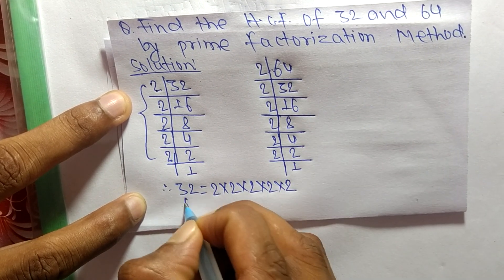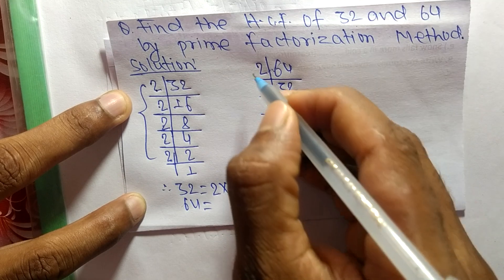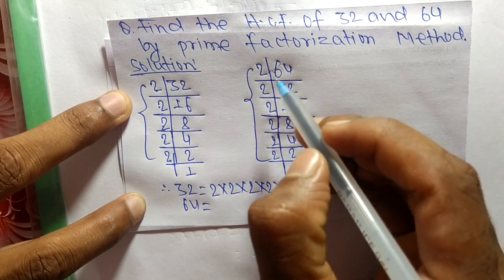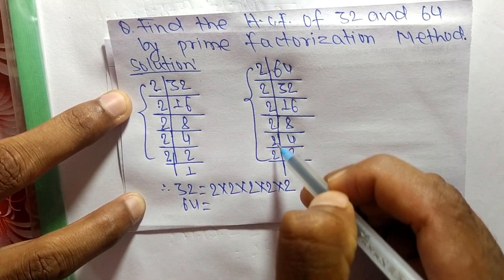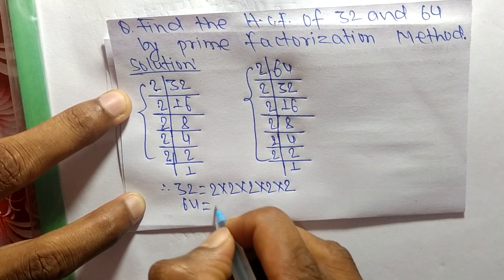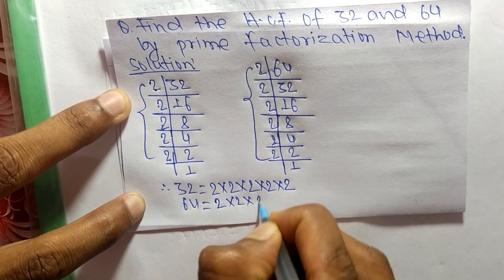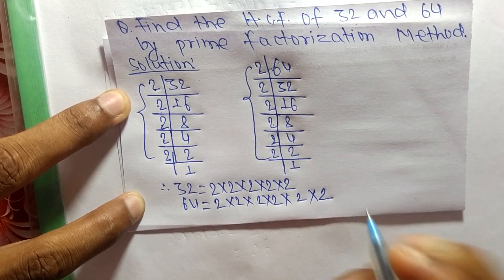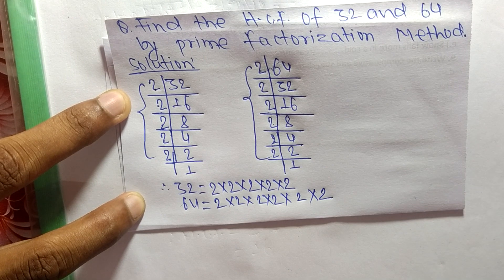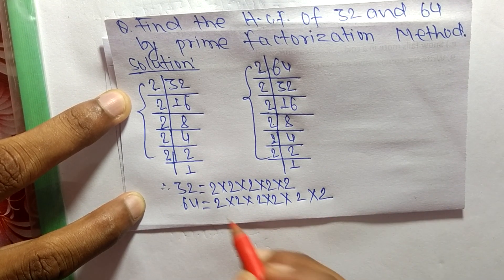Likewise, from the prime factors of 64, counting from this part — 2 multiplied 6 times — so 64 = 2⁶. Now we find the common factors in these prime factorizations.